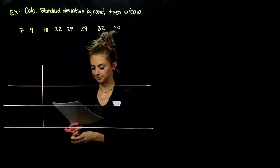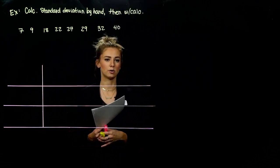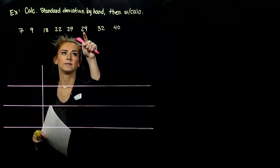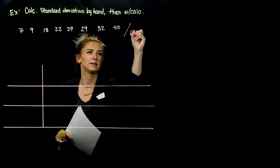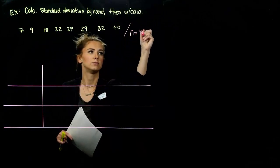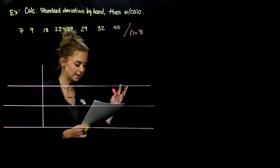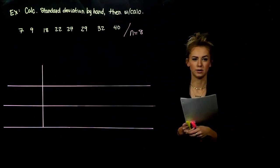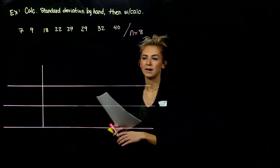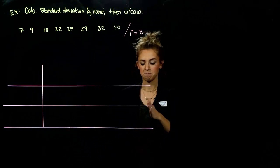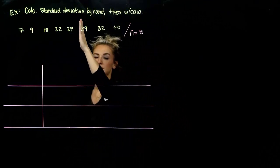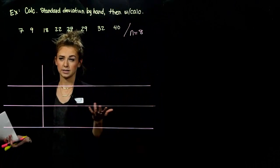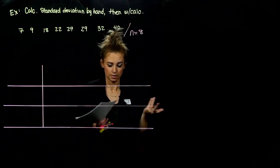We have this data set and the very first thing to know is how many items do we actually have: 1, 2, 3, 4, 5, 6, 7, 8. So n is equal to 8. We had 8 data items, and when we're finding the standard deviation, we're trying to figure out on average how far away from the mean each of these data points are. So the very first thing to calculate is the mean.